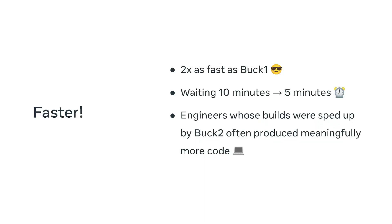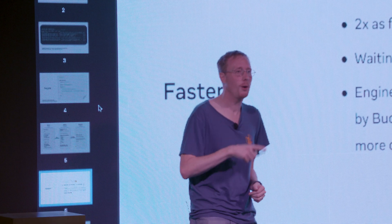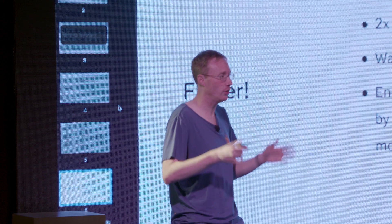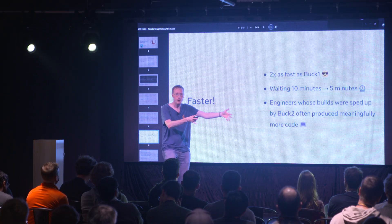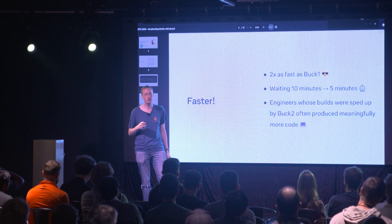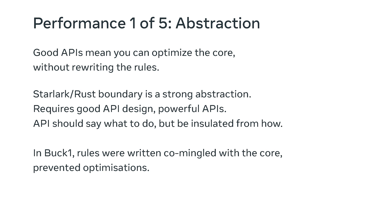Since this is the DPE conference, let's get back to what matters. Buck2 is twice as fast as Buck1 — in real practical terms, a developer who typically spent 10 minutes waiting for their build now spends 5 minutes. Buck1 was no slouch, but Buck2 is now twice as fast. Furthermore, we were able to look at our population of engineers and find that engineers whose builds were sped up by Buck2 often produced meaningfully more code. As we migrated cohorts, they each kept producing more code. So let me go through the five performance features that we added.